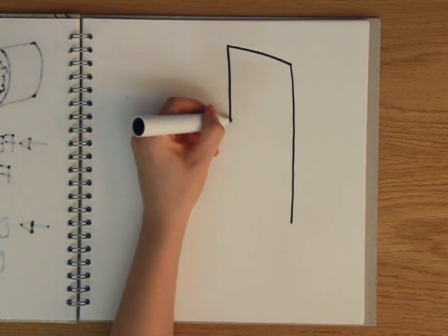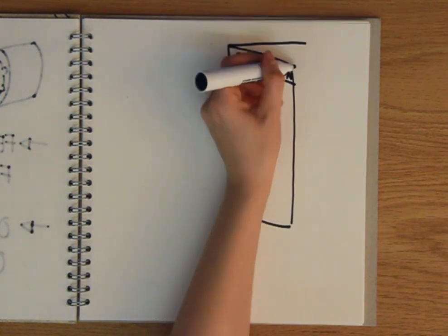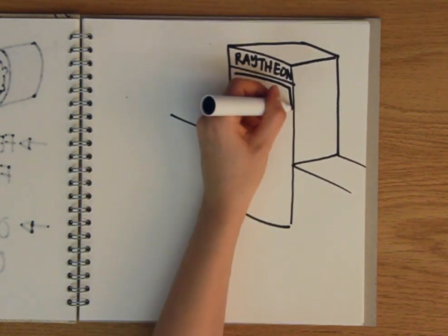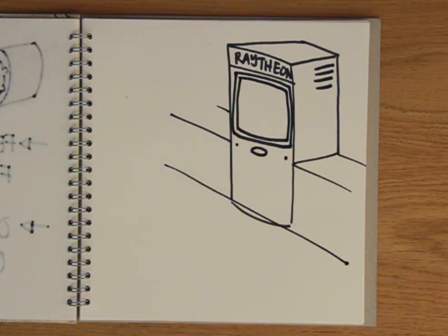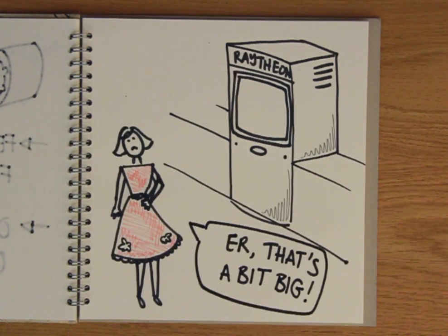After the discovery that microwaves could be used to heat up food, Raytheon, the company Spencer had been working for, tried to market microwaves for home use. Unfortunately, these early microwave ovens were far too large and expensive for practical use in the home, and it wasn't until the mid-1960s that a domestic-sized oven was finally made.